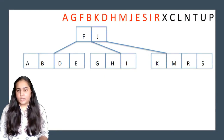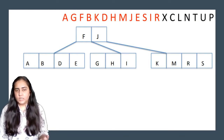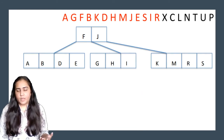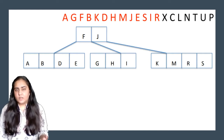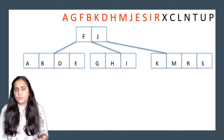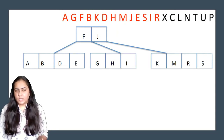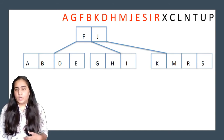Next let's insert E, S, I, and R — these are straightforward without any changes. To insert E, go to the left of F and place it next to D. To insert S, go to the right of J and place it in ascending order. To insert I, go between F and J — right of F, left of J — and place it next to H in ascending order. To insert R, go to the right of J and place it between M and S.